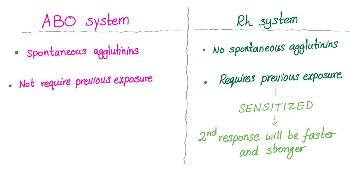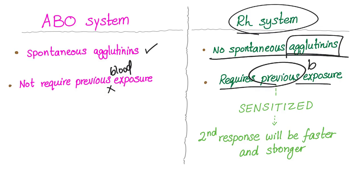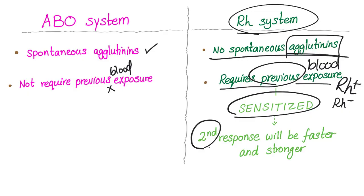There is a key difference between the ABO system and the RH system. The ABO system can produce spontaneous agglutinins without exposure to foreign blood — any baby is born without agglutinins, but spontaneously, a few months after birth, the baby will form antibodies without requiring previous exposure to blood. On the other hand, in the RH system, there is no such thing as spontaneous agglutinin. For these antibodies to form, you must have been previously exposed to RH positive blood while being RH negative — you are now sensitized. If this happens again, the second response will be faster and stronger.